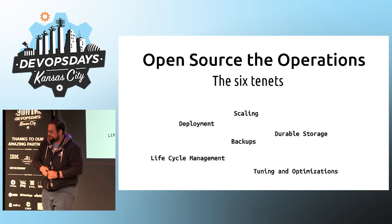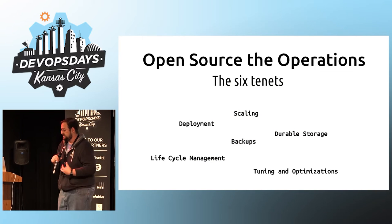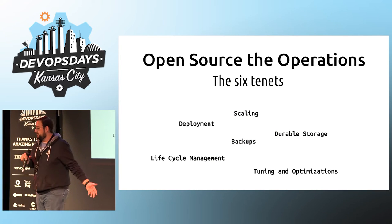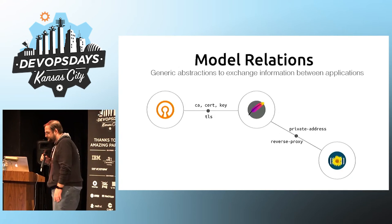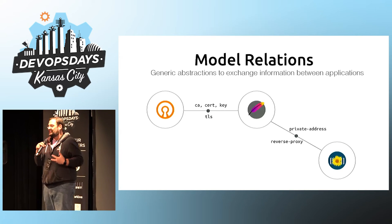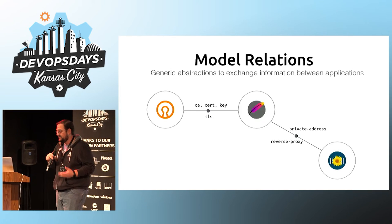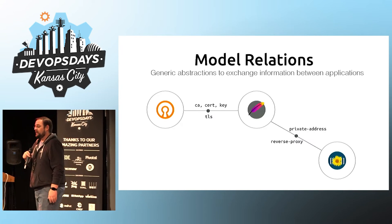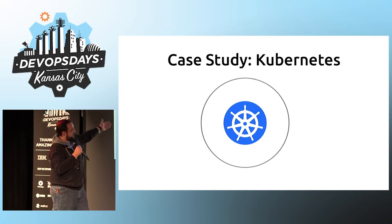Maybe you can use this across sectors in your business. By doing this, we can start to look at the six tenets of what I'm calling open source operations: how it scales, how we would back it up, what our deployments look like, lifecycle management, durable storage, tuning and operations. What actually enables this is the relationships between applications — and this is the most interesting part to me. In this particular example, you're seeing an exchange of TLS certificates between an Apache web server and a TLS database.